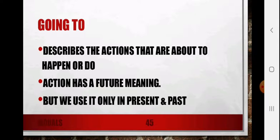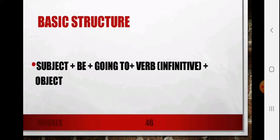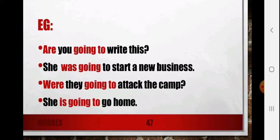Next is 'going to,' which describes actions that are about to happen or be done. The action has a future meaning but we can also use it in the present or past. Basic structure: subject + be + going to + verb + object. Examples: 'Are you going to write this?', 'She was going to start a new business,' 'Were they going to attack the camp?', 'She is going to go home,' 'I am going to purchase a new car.' These are examples in which we are using 'going to' for a future or current action which is possible to happen.